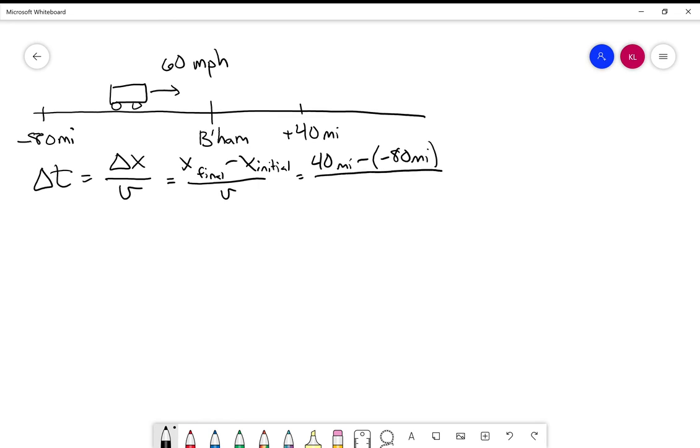Divided by 60 miles per hour. So I'll just do that math. I get 120 miles divided by 60 miles per hour. I see that the miles cancel and what I'm left with is two hours.